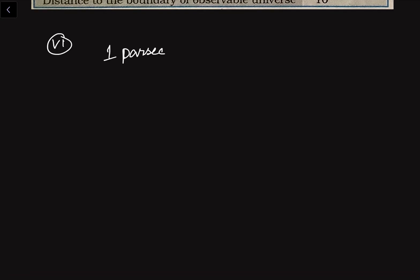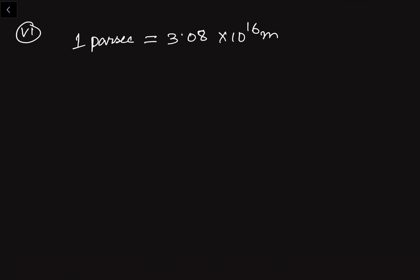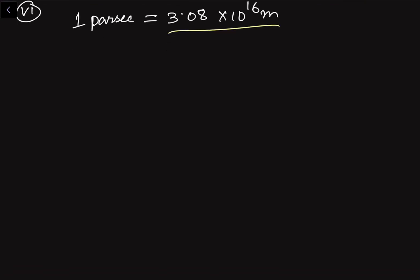The sixth unit is the parsec. One parsec equals 3.08 × 10 to the power 16 meters. This is the largest unit we are discussing. To understand how this value is derived, we use the astronomical unit as a reference.